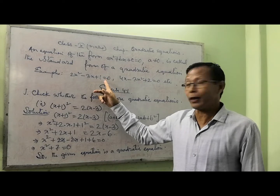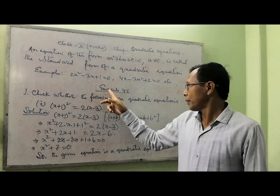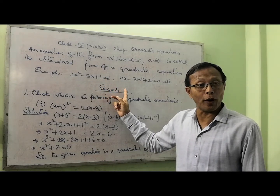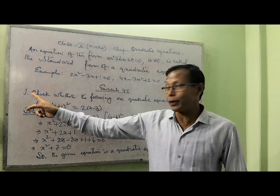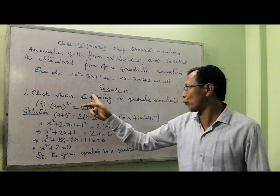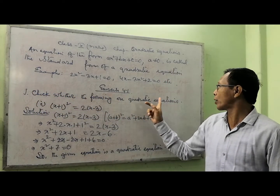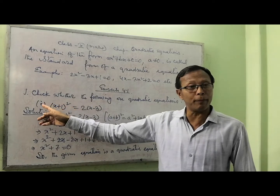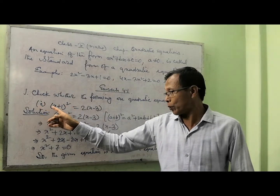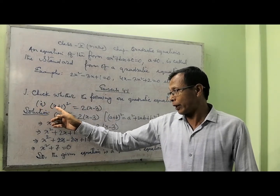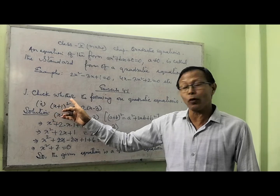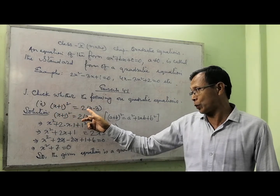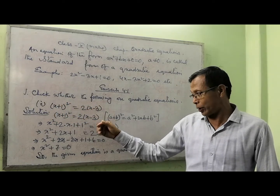From this chapter, I want to start your exercise 4.1. The first question is: check whether the following is a quadratic equation. Number 1 — I am going to pick up number 1 from your book. The question is: (x plus 1) squared equal to 2 times (x minus 3).